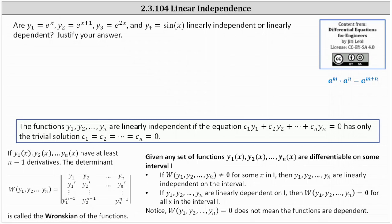Are the functions y sub 1 through y sub 4 linearly independent or linearly dependent? Justify your answer. The functions y sub 1 through y sub n are linearly independent if the equation c sub 1 times y sub 1 plus c sub 2 times y sub 2, all the way down to plus c sub n times y sub n equals 0, has only the trivial solution c sub 1 through c sub n equals 0.